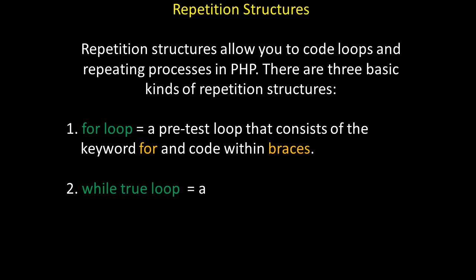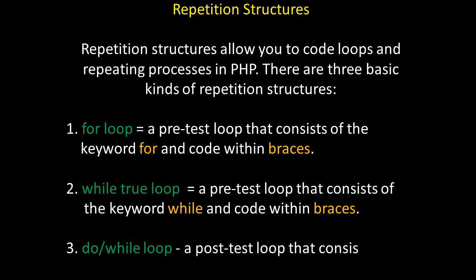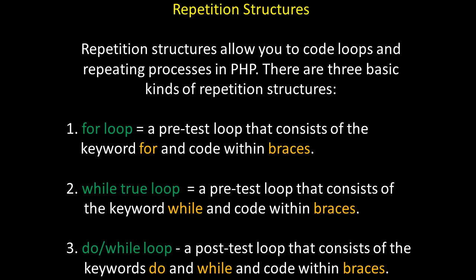Repetition structures allow you to code loops and repeating processes in PHP. There are three basic kinds of repetition structures. The first we'll look at is a for loop. It is a pretest loop that consists of the keyword for and code within braces. By saying it is pretest, we mean that it tests for a condition first, and if that condition is true, it will iterate or repeat. If that condition is false, it will not.